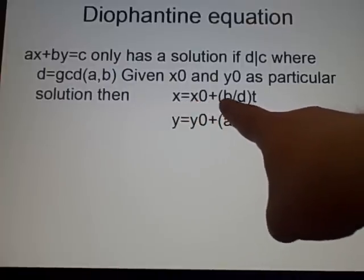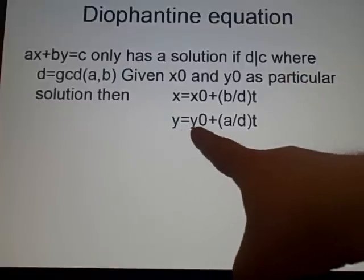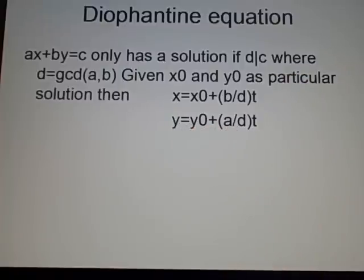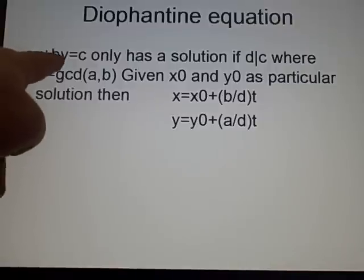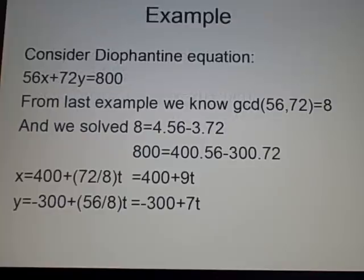So, x is x0 plus b divided by d times t, and y is y0 plus a divided by d times t. Now, as you notice, the x, it divides by the opposite thing, so we have the b divided by d, and the y is the a divided by d.